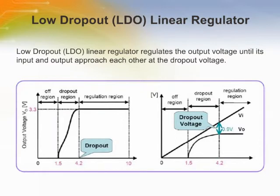Dropout voltage is defined as the minimum input-to-output voltage difference where the output voltage of the LDO regulator remains regulated. The LDO regulates the output voltage until its input and output approach each other at the dropout voltage. Ideally, the dropout voltage should be as low as possible to minimize power dissipation and maximize efficiency.